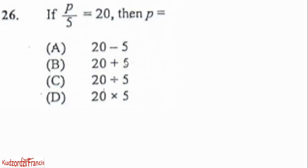Now we have number 26 over here. If p over 5 is equal to 20, then p is equal to what? So the given expression is this. Now to get rid of the fraction, we need to multiply both by 5, and that will give you this. Now this will cancel this. Left with p is equal to 20 times 5. So they didn't simplify it. The answer was inside like that. So the correct option will be option D.